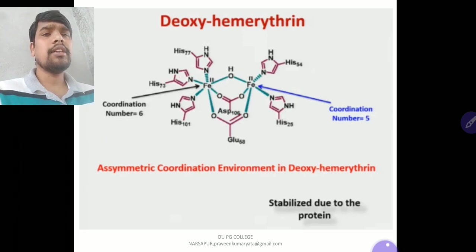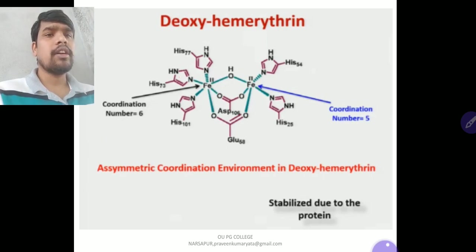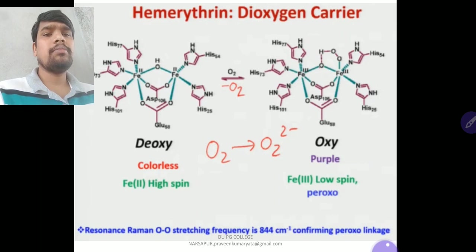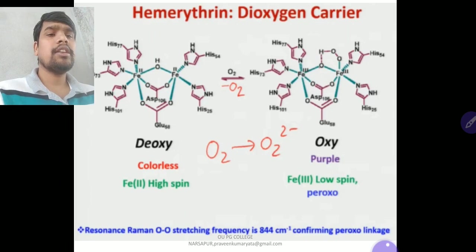In deoxyhemerythrin, one iron is 6-coordinate and another is 5-coordinate, with asymmetrical coordination environments stabilized by the protein. Deoxy form is colorless, high-spin Fe(2+). When oxygen binds, it is converted to a purple color, forming an Fe3+-peroxy species. Resonance Raman spectroscopy shows an O-O stretching frequency of 844 cm-1, confirming the peroxo linkage and iron-peroxy bond.